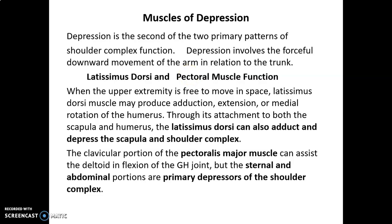Depression is the second of the two primary patterns of shoulder complex function. It involves the forceful downward movement of the arm. The major muscles involved are the latissimus dorsi and the pectoral muscles, which function as the muscles of depression of the shoulder complex. When the upper extremity is free to move in space, latissimus dorsi can produce adduction.